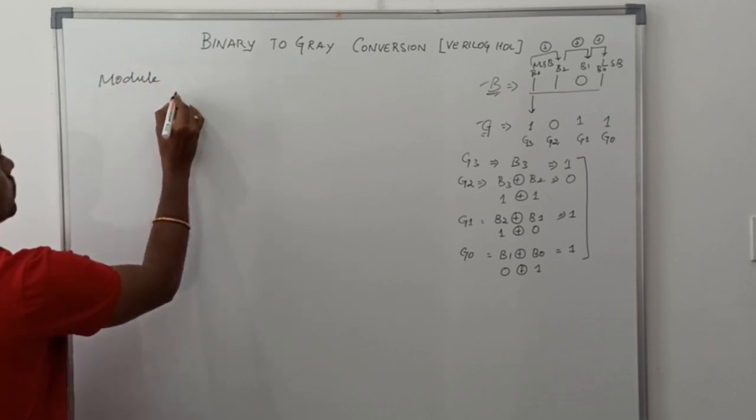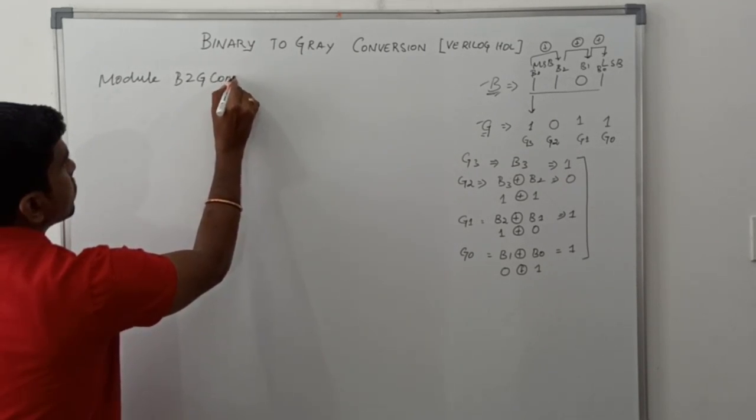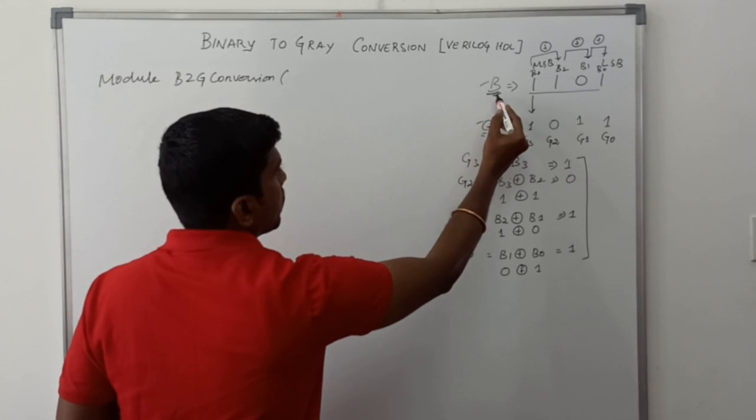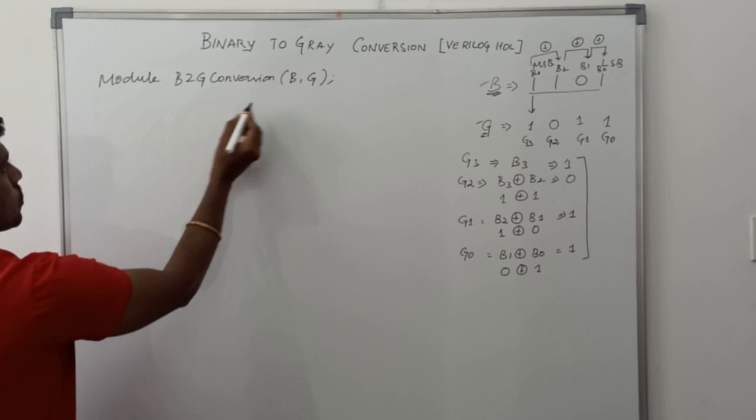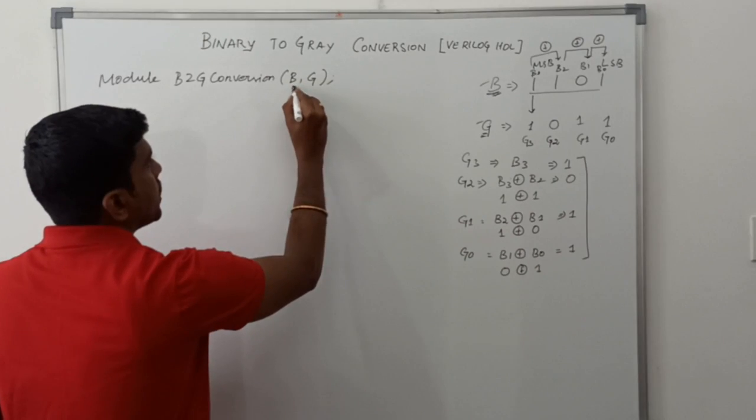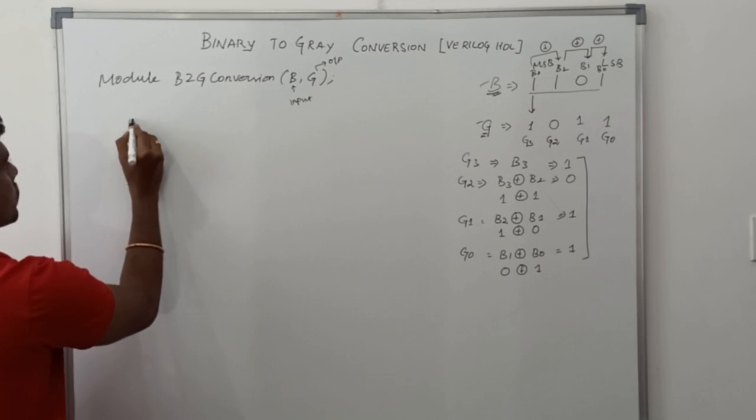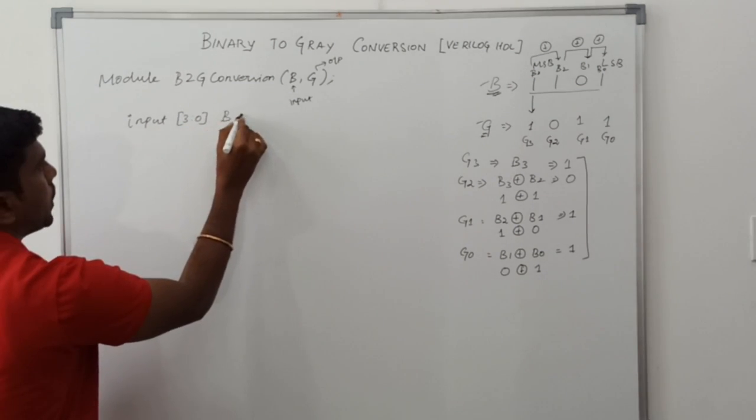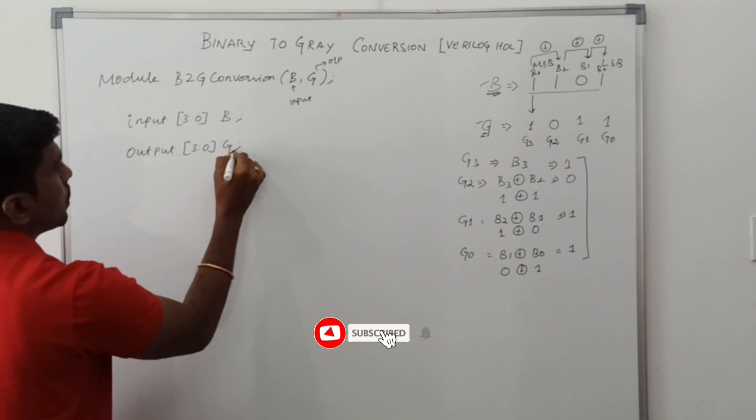First you write module, then binary to gray code conversion. In these steps we are using two variables, B and G. Among these two variables, binary is the input and gray is the output variable. Input is 3 to 0 B, output is 3 to 0 gray code.